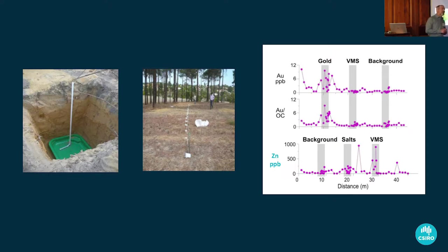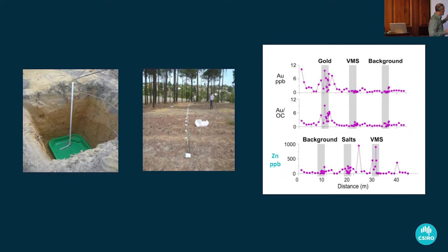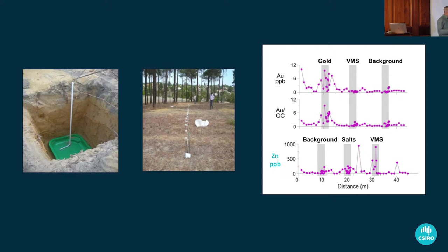We did this in an experiment out the back of CSIRO, just behind our building, in sand dunes through transported cover. We buried ore in child clay pools, backfilled them, and then started monitoring the surface. I was sceptical we would see a lot very quickly. But within seven months of burying those, we were able to detect soil geochemical anomalies in gold and base metals — zinc and copper — over the buried base metal ore, over two metres of cover. And that reproduced; it was seasonal, it fluctuated a little bit, but it was always there.